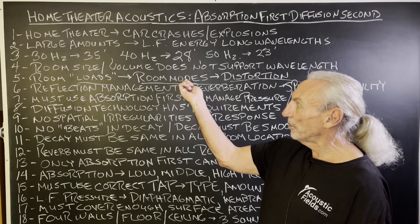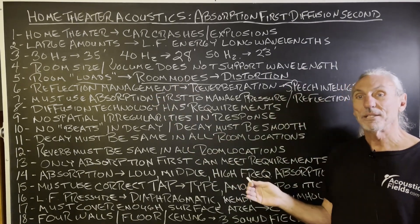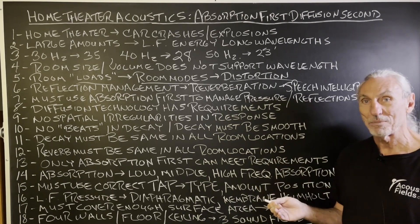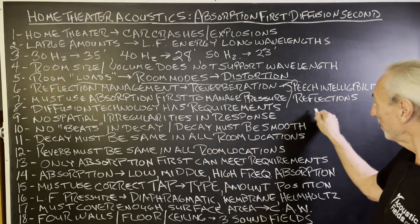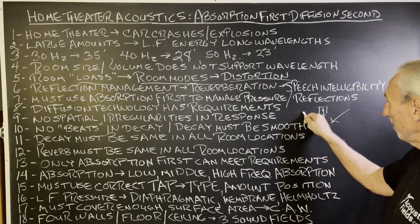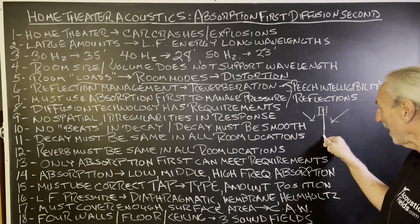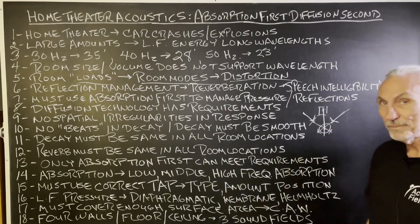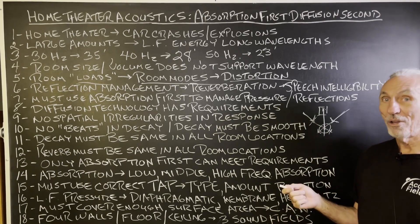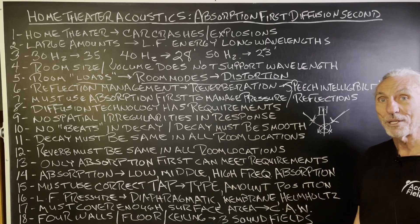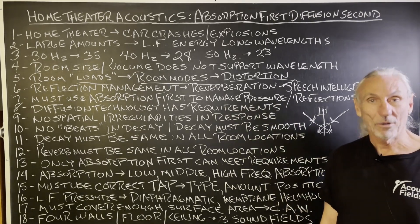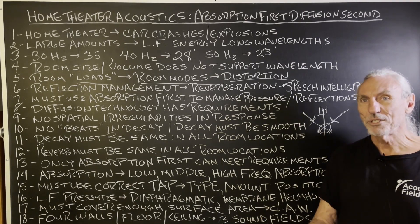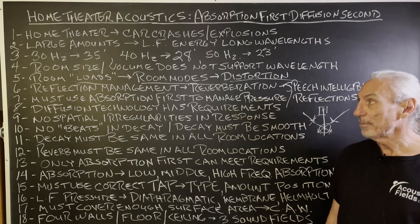That's the low frequency side. Then we have the reflection management side, because it's always a balance between the energy coming out of your speakers — sides, rears, ceiling speakers — it's always a relationship between the direct energy from the speaker and the reflected energy from the room. As those reflections cross the direct energy, this is distortion. Speech intelligibility gets impacted — you'll have a car crash and then dialogue right after it, and you won't even be able to hear it. The room is not managing it correctly because you don't have the proper absorption.